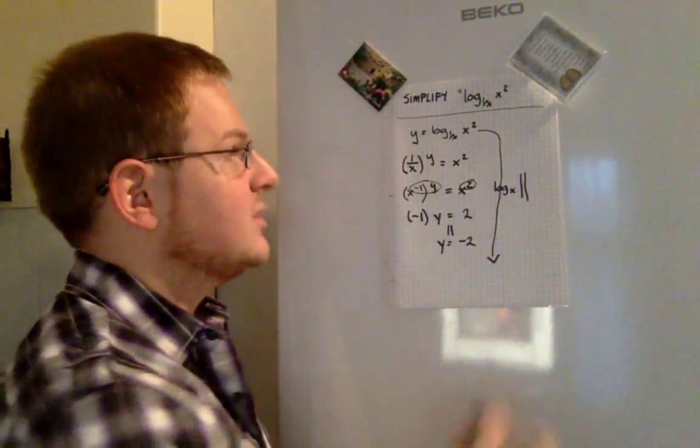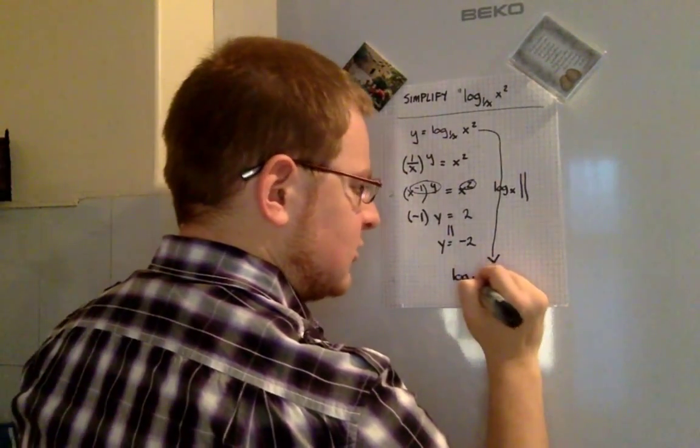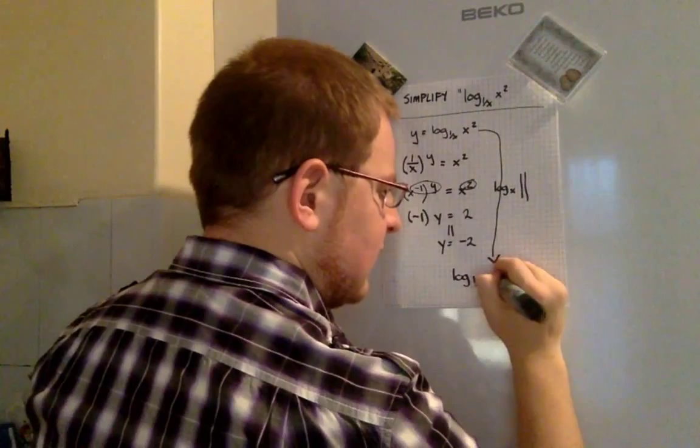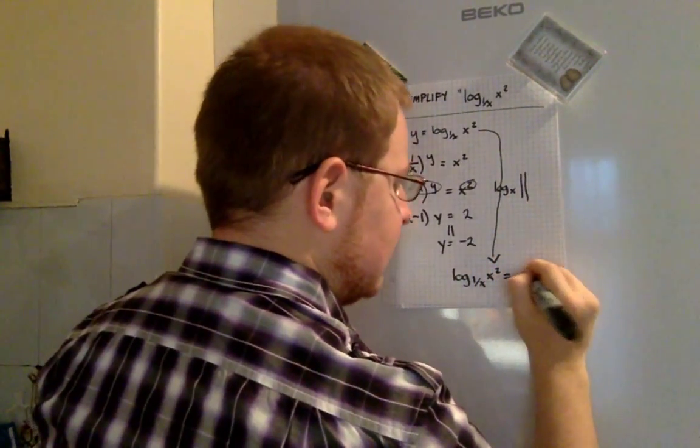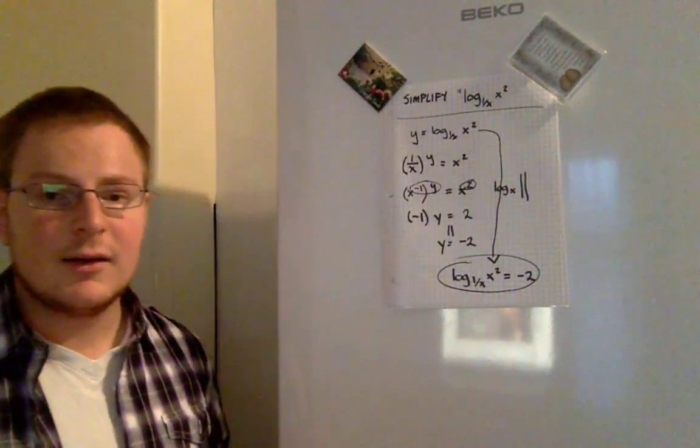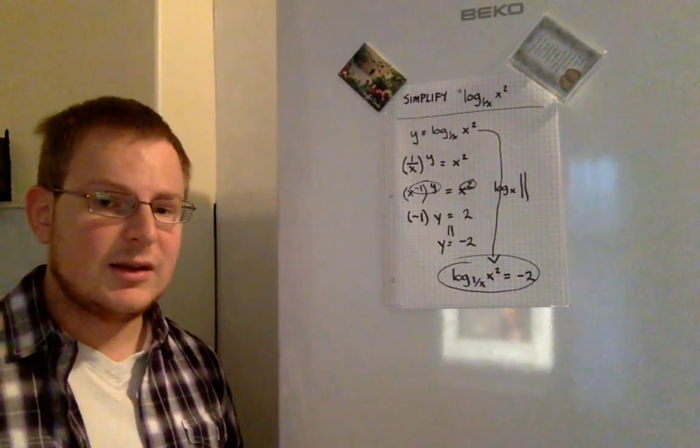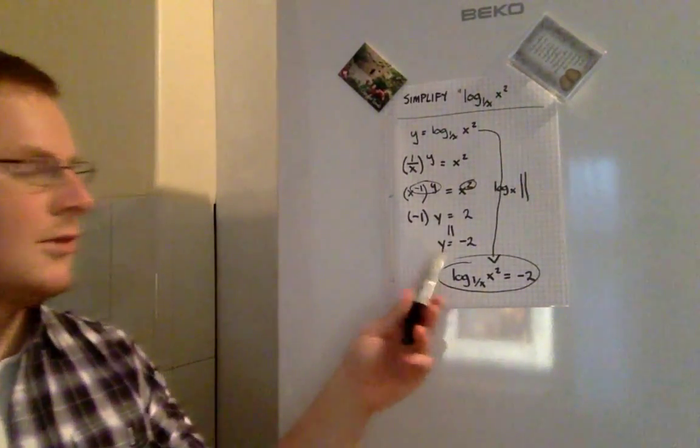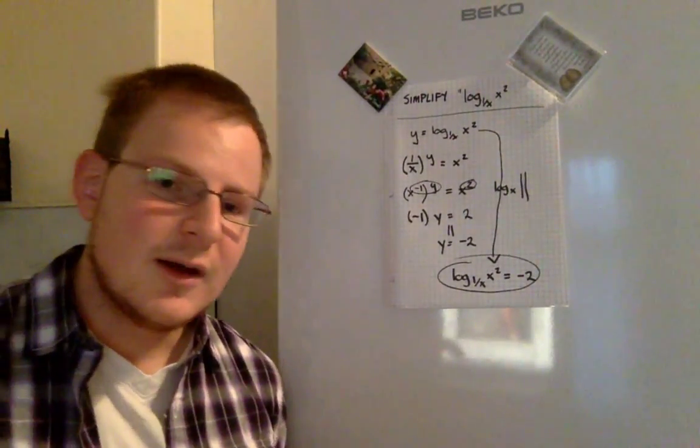We just plug into the first equation: log to the base 1 over x of x squared is equal to negative 2. That right there is our answer taken in the most simple way possible.